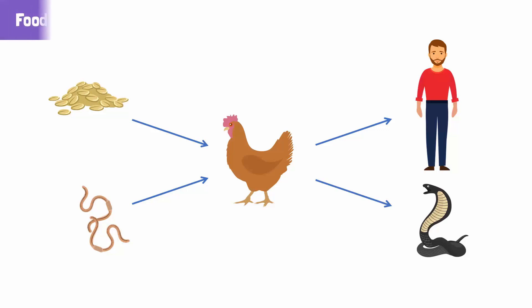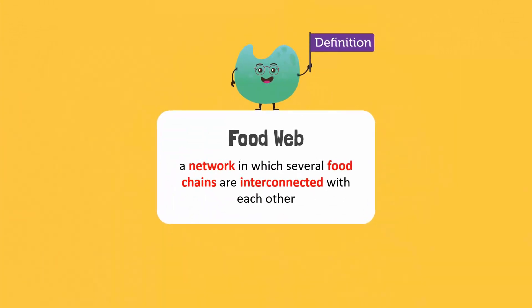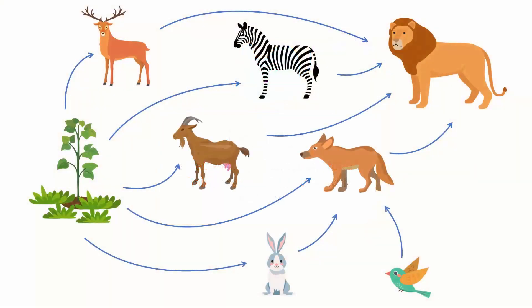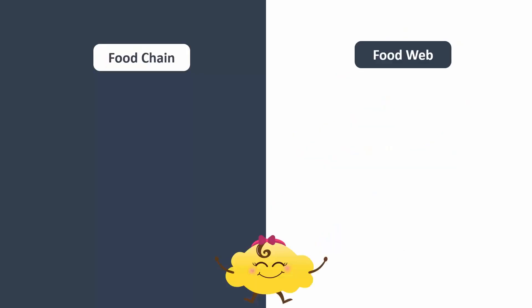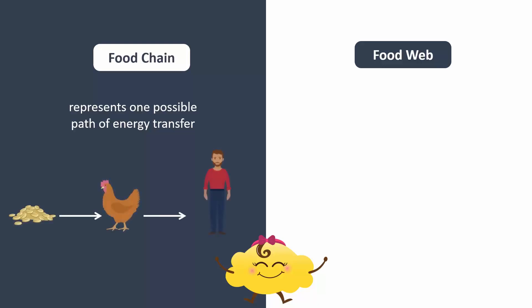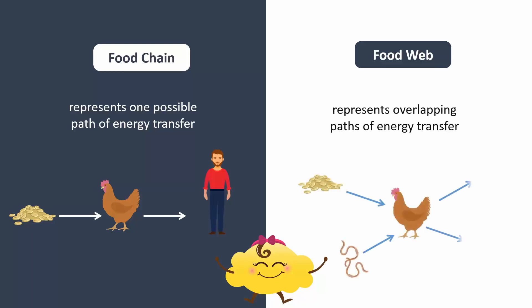That's a great observation. So we can in fact draw more branches to the food chain and end up with a network where multiple chains overlap. This is called a food web. A food web is a network in which many food chains are interconnected with each other. For example, a lion feeds on goats, deer, jackals, and many other animals. Jackals can feed on rabbits, birds, insects, and fruits. Goats, deer, and zebras feed on plants. So a food chain represents one possible path in which energy transfers from one organism to another. On the other hand, a food web consists of many food chains.